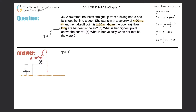Here's the swimmer — I'd say he looks like Michael Phelps, but that's just me. His height above the diving board is 1.80 meters, and he is leaving the diving board at a velocity straight up of 4.00 meters per second. So we want to know how long his feet are in the air.